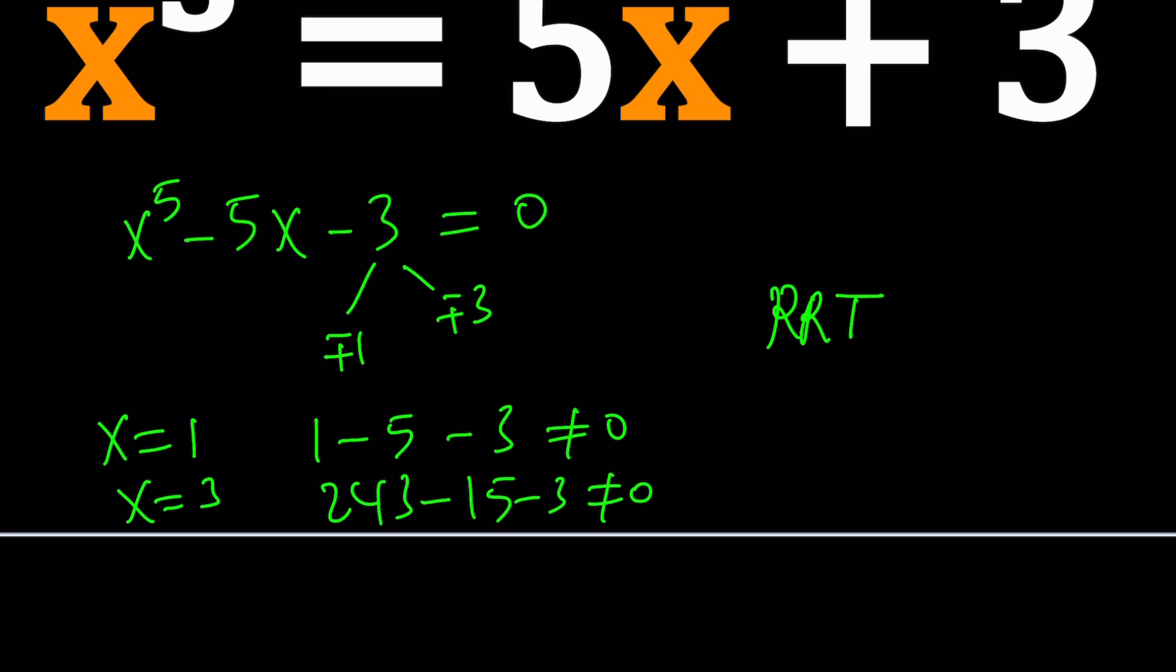But wait a minute, this is a quintic, so it should have at least one real solution. Why? Because the coefficients are real numbers and complex roots come in conjugate pairs, like a plus bi and a minus bi.